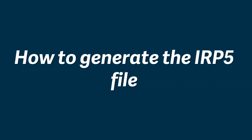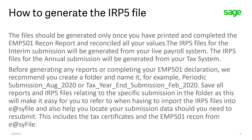Now we can have a look at how to generate the IRP-5 file. We recommend that you only generate your IRP-5 files once you've completed your EMP-501 recon and reconciled all your values. The IRP-5 files for the interim submission will be generated from your live payroll system, and the IRP-5 files for the annual submission will be generated from your tax instance. Before generating any reports or completing your EMP-501 declaration, we recommend that you create a folder, give it a unique name, and save all the respective files and reports generated during the submission process into these folders.